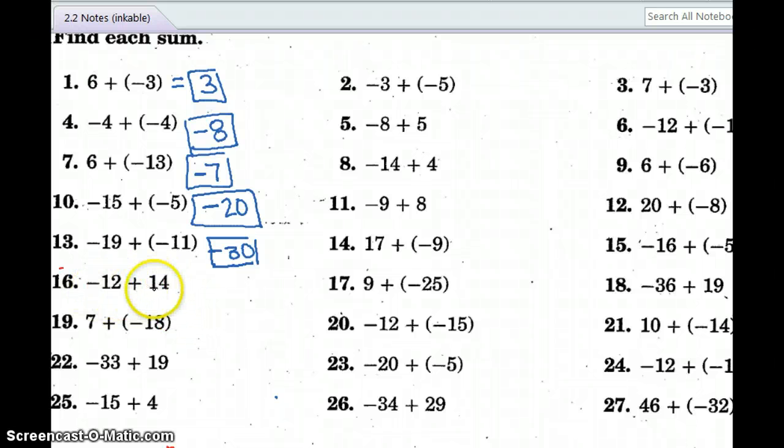Same sign. So it's going to be negative 19 plus 11 gives us 30. So it's a negative 30. Opposite signs. So I'm going to subtract. And 14 minus 12 is 2. Which sign do I keep? The 14 is a greater absolute value than 12. And it's positive. So I keep the positive 2. Opposite signs. I might even take a second and get my highlighter and go through. Opposite signs. Opposite signs. Opposite. Same sign. Same sign. Opposite sign. Opposite sign.